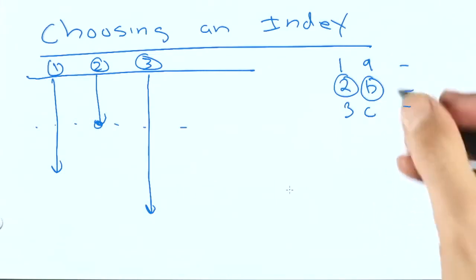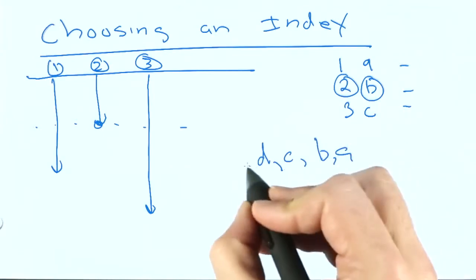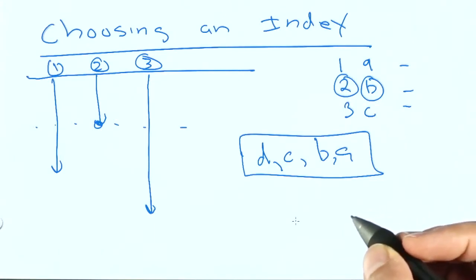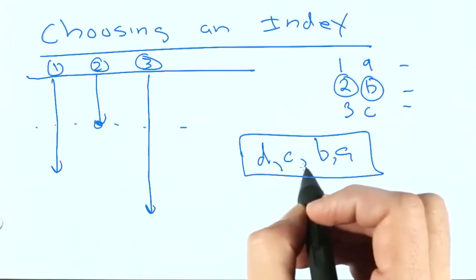And just to review, if you have a compound index on DCBA in that order, then in order for the database to use this index, you have to specify some left subset of these items.